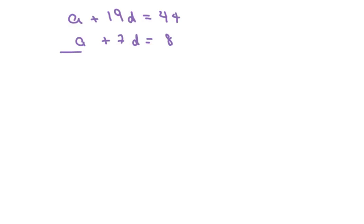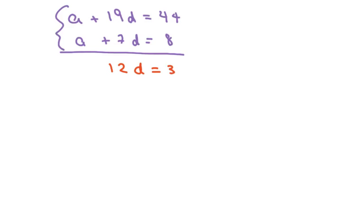I'm going to use the process of elimination, because we have a system of linear equations, and I'm going to eliminate my a. That gives me 12d equals 36, so d equals 3.